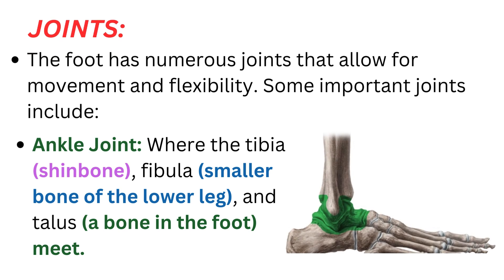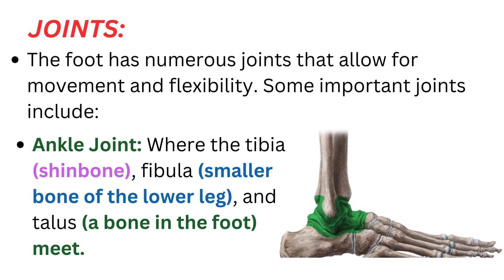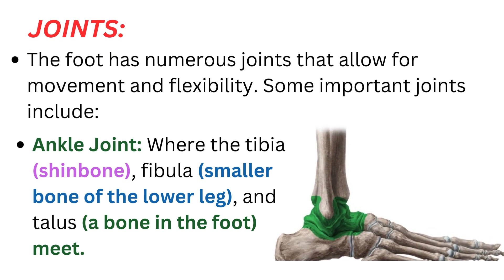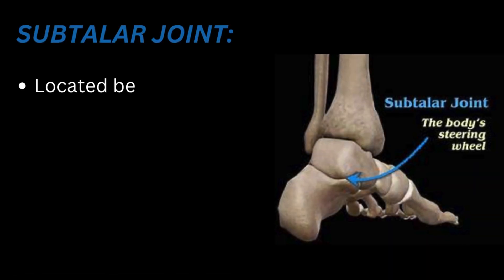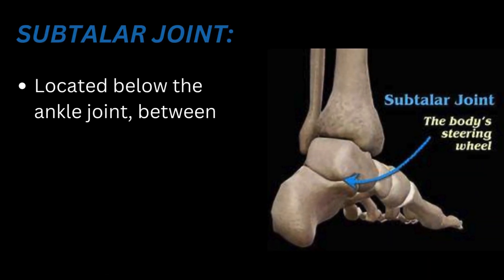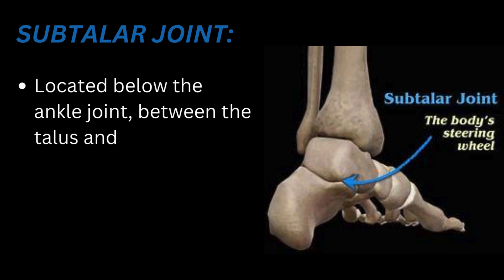Joints. The foot has numerous joints that allow for movement and flexibility. Some important joints include: the ankle joint, where the tibia (shin bone), fibula (smaller bone of the lower leg), and talus (a bone in the foot) meet. The subtalar joint is located below the ankle joint, between the talus and calcaneus (heel bone).